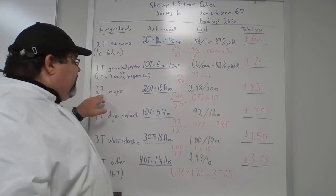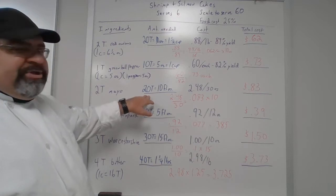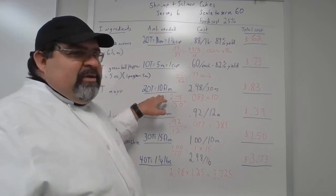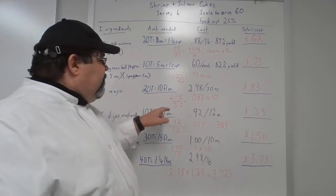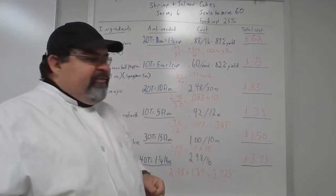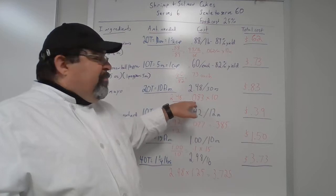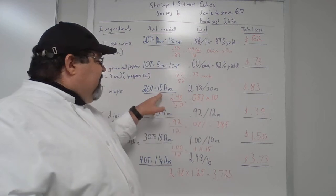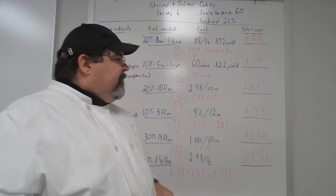Two tablespoons of mayonnaise — scaled up, you need 20 tablespoons, divided by two to get 10 fluid ounces. The mayonnaise jar is $2.48 for a 30-ounce jar. Take $2.48 divided by 30 ounces to give you $0.083 per ounce, then multiply by the 10 fluid ounces you need. That gives you $0.83 for the mayonnaise.